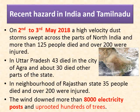In neighboring Rajasthan state, 35 people died and over 200 were injured. The wind downed more than 8,000 electricity posts and uprooted hundreds of trees. Dust storms are a feature of India's seasonal weather patterns — the storms occur in the summer months when the weather has been dry, allowing dust to be picked up by passing winds. The 2018 dust storm was more damaging and devastating because it struck at night when most people were asleep and unable to take precautions.